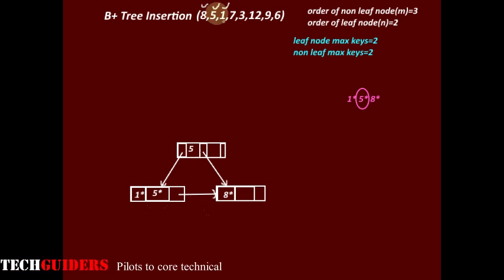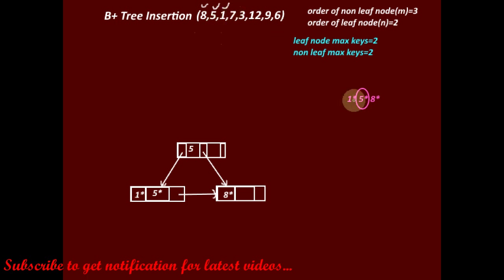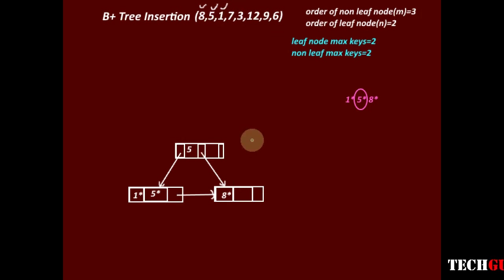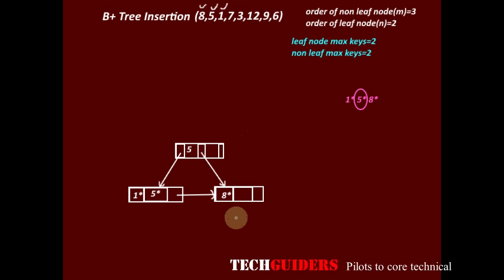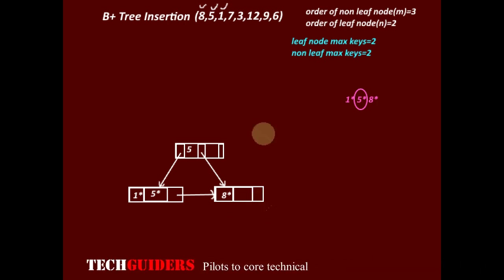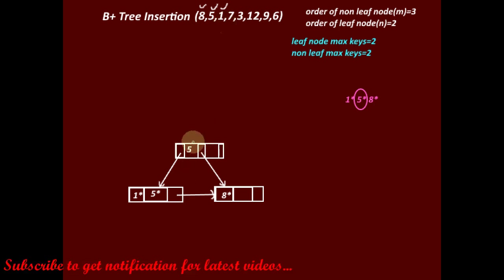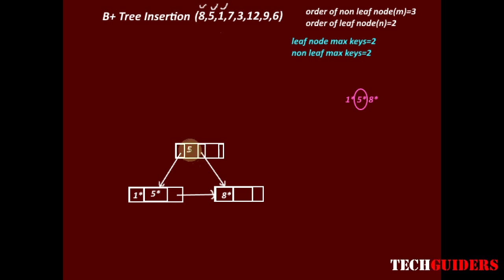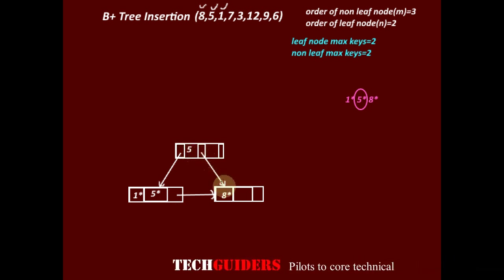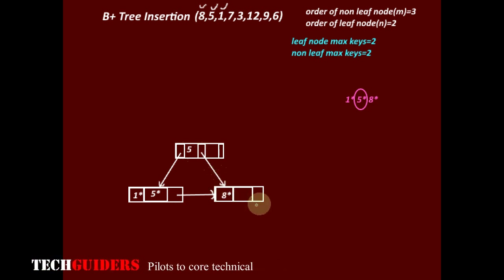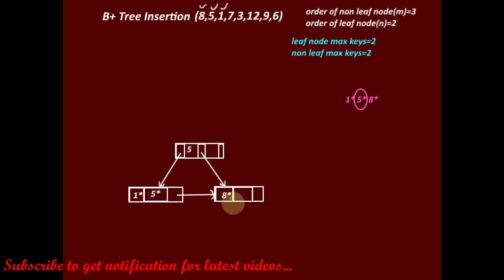The first three entries are done. Next, we insert 7. In a B+ tree, new elements are always inserted at the leaf node. To find the correct leaf node for 7, start from the root: 7 is greater than 5, so follow the right pointer and proceed to the right subtree. There is space in this leaf node, so we insert 7 before 8.